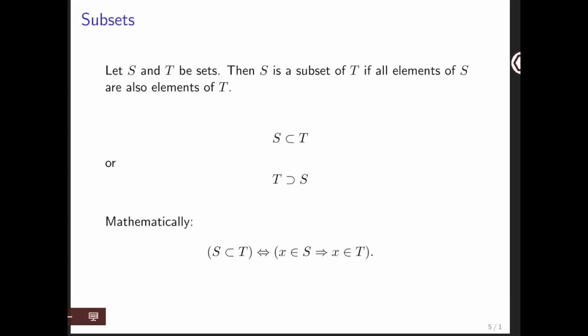If you have two sets S and T, then S is said to be a subset of T if all the elements of S are also elements of T. And that's denoted like that, or sometimes it's denoted that S is a subset of T, but the S is written on the right. And mathematically you say that S is a subset of T if and only if x being an element of S implies that x is also an element of T.